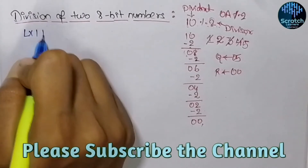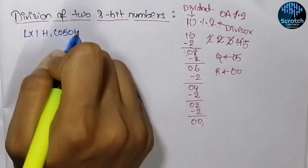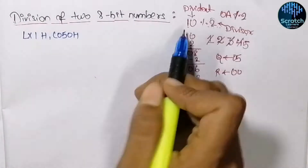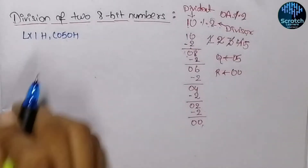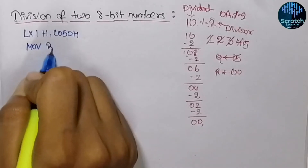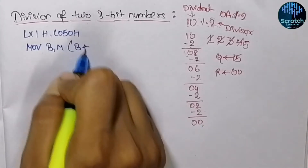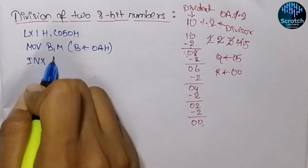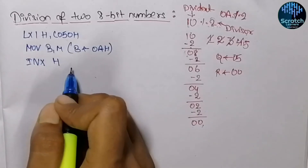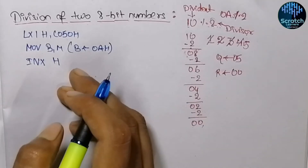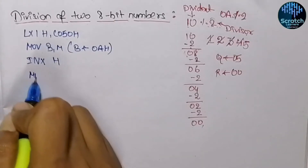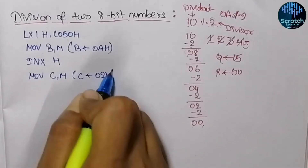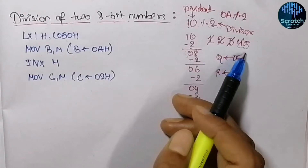First we will input the data: LXI H, C050 hex. Here we take the first data — the dividend — and input 0A hex, moving it into register B so B contains 0A hex. Then we execute INX H to move to the next address and take the second data — the divisor — moving it into register C, so C contains 02 hex.